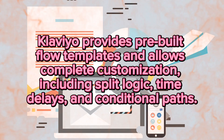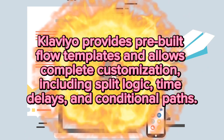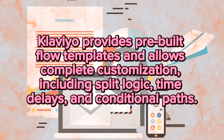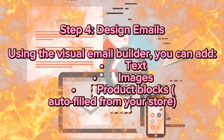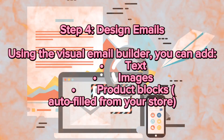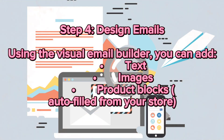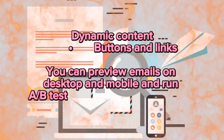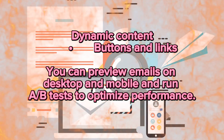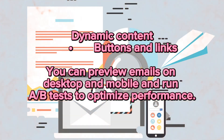Klaviyo provides pre-built flow templates and allows complete customization, including split logic, time delays, and conditional paths. Step 4 – Design Emails Using the Visual Email Builder: You can add text, images, and product blocks autofilled from your store. Dynamic content, buttons, and links are all supported. You can preview emails on desktop and mobile and run A/B tests to optimize performance.